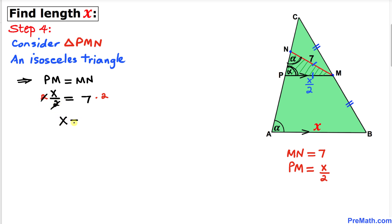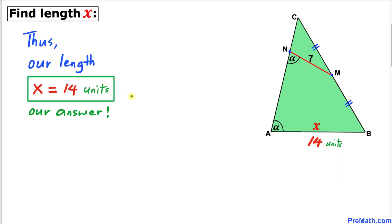So x turns out to be 2 times 7, which is 14 units. Thus, our length x turns out to be 14 units.